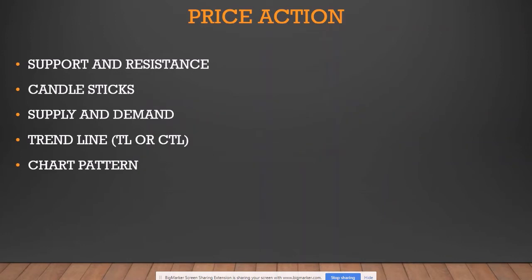There are price action triggers and secondary indicators. For price action triggers we have support and resistance, candlestick patterns, supply and demand zones, trend lines, counter trend lines, and chart patterns. For example, if support and resistance is your trigger, you could have a trading plan where multiple conditions must be met, but to actually execute the trade you need a support/resistance level to be broken and closed. If you're in a downtrend and want to go short, your trigger could be when price breaks support and closes below it.